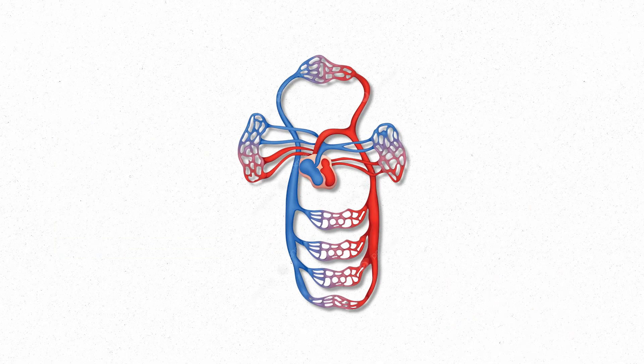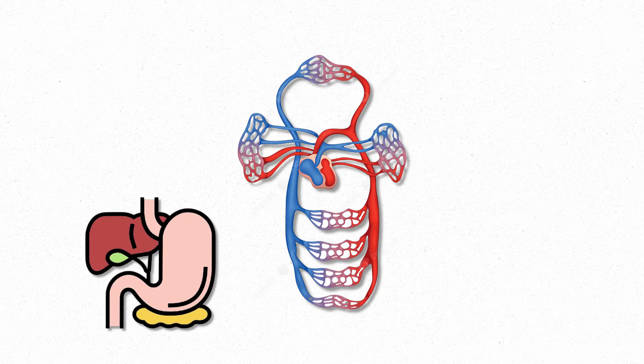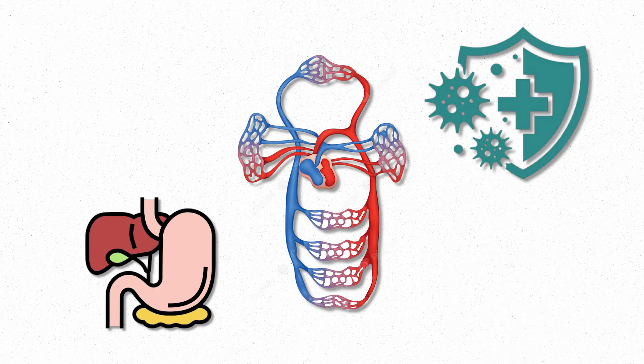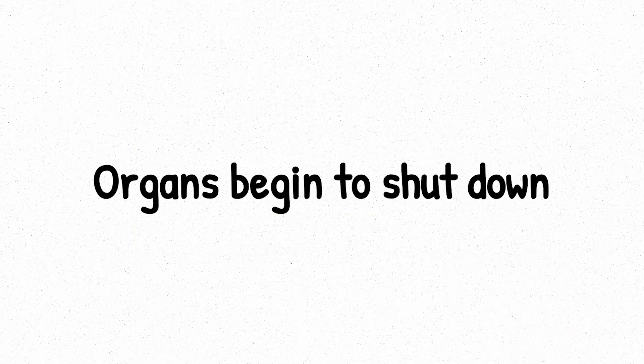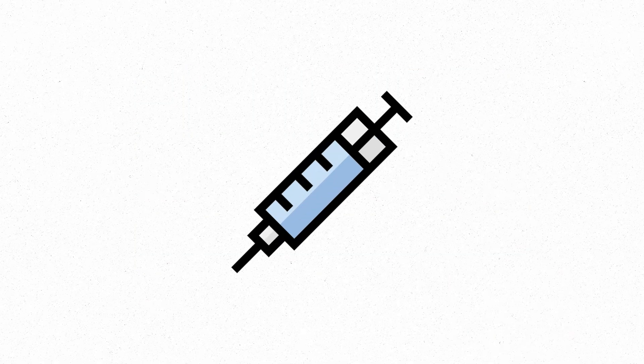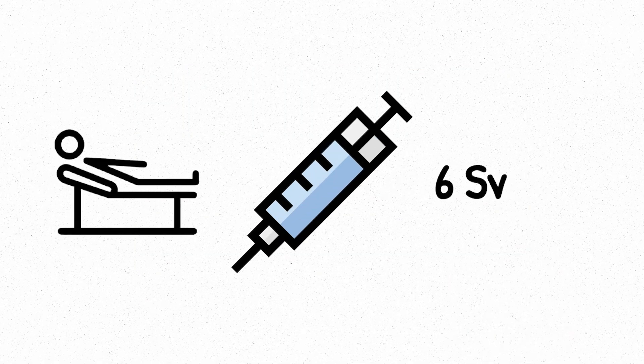The body's internal systems – circulatory, gastrointestinal, immune – start collapsing simultaneously. Bone marrow function is obliterated. Organs begin to shut down. At doses above six sieverts, survival becomes almost impossible.